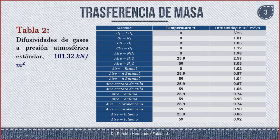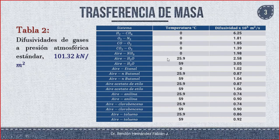La tabla nos da la difusividad de la mezcla hidrógeno y CH₄. La difusividad a cero grados es 6.25×10⁻⁵ metros cuadrados por segundo para ese sistema. También tenemos el sistema oxígeno-nitrógeno, monóxido de carbono con oxígeno, y el resto de componentes que aparecen aquí. La tabla A2 solamente da el resultado de la difusividad de estos componentes.